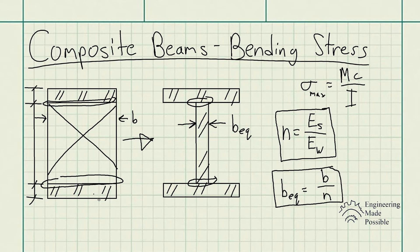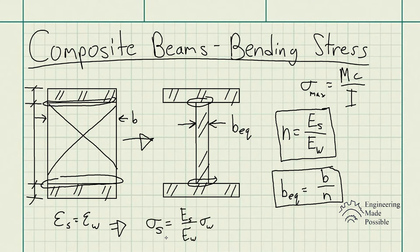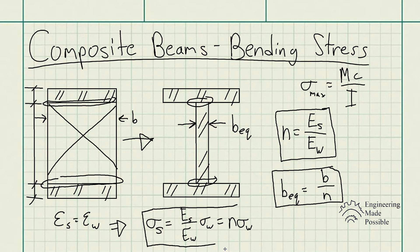Another relationship used in this transformation is that at the interfaces where the wood and steel make contact, the strain of the strong and weak material is equivalent. This gives us a stress relationship: the stress in the strong material equals (E_strong / E_weak) times the stress in the weak material, which is the transformation factor times the stress in the weak material. You can solve for either the strong or weak stress using this relationship.